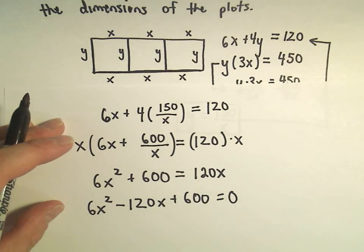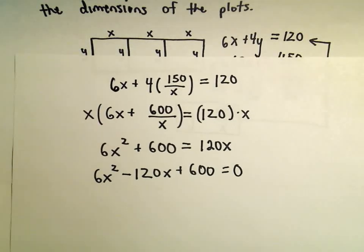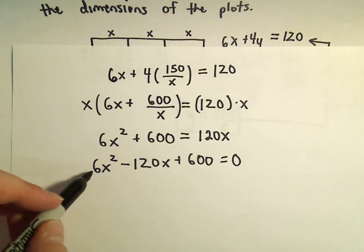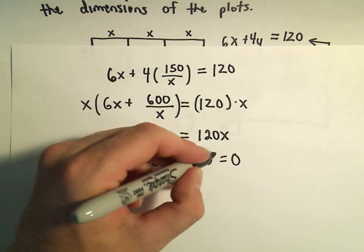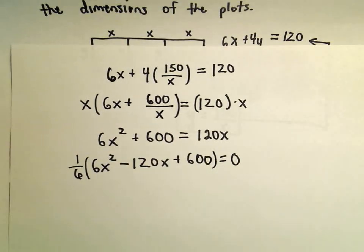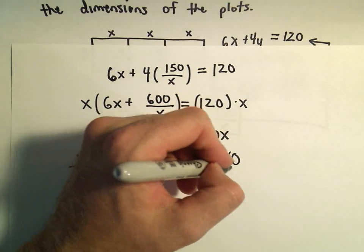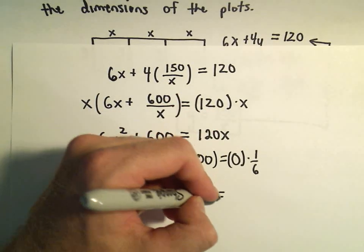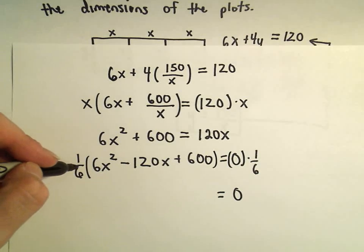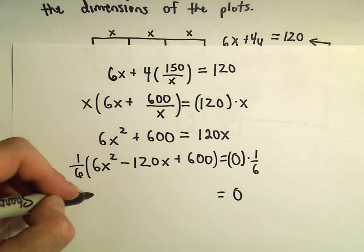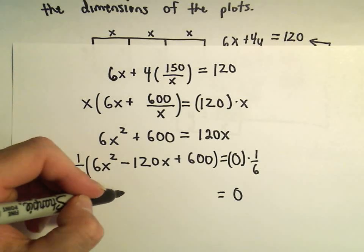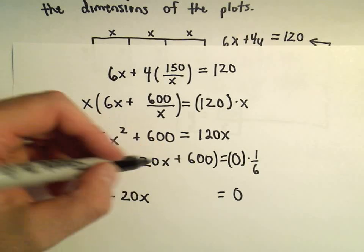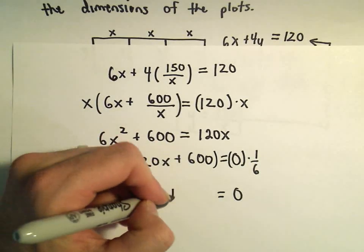One thing I'm going to do just to make the numbers a little more bearable — I notice that 6 goes into 6, 120, and also 600. So I'm going to divide both sides by 6. The right side still simply stays 0. 6 divided by 6 gives x squared. Negative 120 divided by 6 would be negative 20x. And 600 divided by 6 is going to be positive 100.